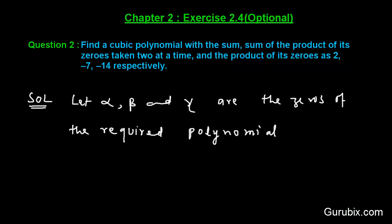So let us see how to solve this question. First of all, we shall let alpha, beta, and gamma be the zeros of the required polynomial p(x).